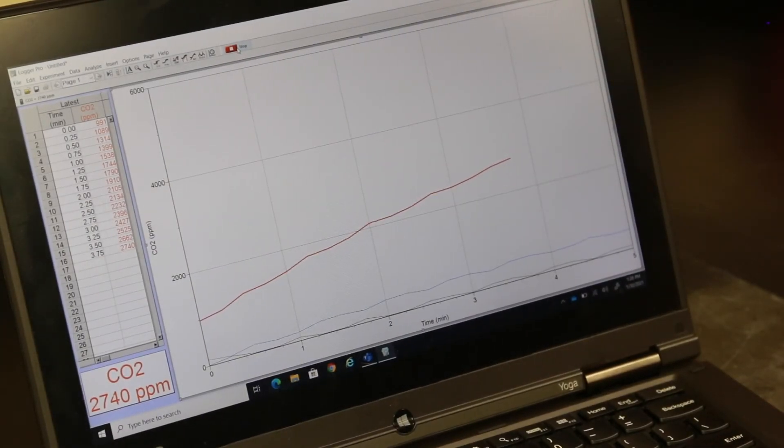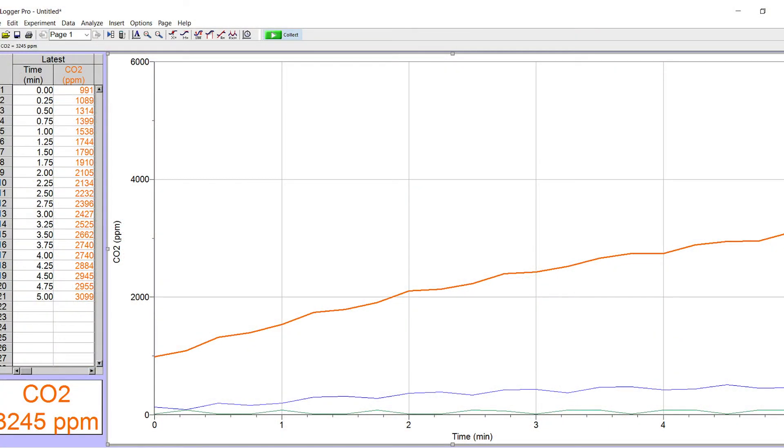We can now see the data collection occurring on the Vernier software. The red line is the increasing CO2 levels from the germinated peas.